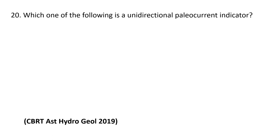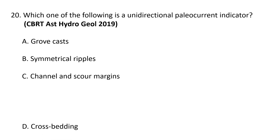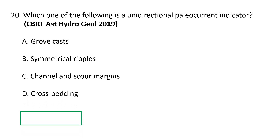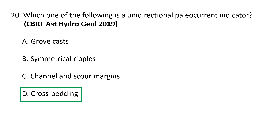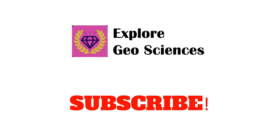Next question: which one of the following is a unidirectional paleocurrent indicator? a) grooves, b) symmetrical ripples, c) channel and scour margins, d) cross-bedding. The correct option is d) cross-bedding. Cross-beds tell geologists much about ancient environments: the direction of dipping beds indicates the paleocurrent and sediment transport direction, and the type and condition of sediments indicate the environment. Cross-bedding is a unidirectional paleocurrent indicator. I hope you found these questions useful — please subscribe to Explore Geosciences and see you in the next video.